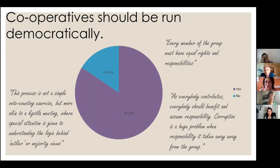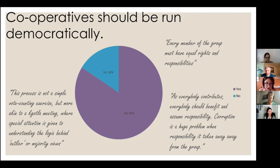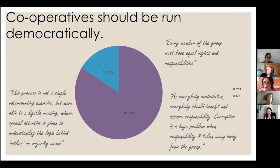On democratic governance, 84% said yes. Responses included: 'every member of the group must have equal rights and responsibilities'; 'this process is not a simple vote-counting exercise but more akin to a kgotla meeting where special attention is given to understanding the logic behind outlier or majority views' — a kgotla being a type of traditional gathering in South Africa; and 'everyone contributes, everyone should benefit and assume responsibility — corruption is a huge problem when responsibility is taken away from the group.'